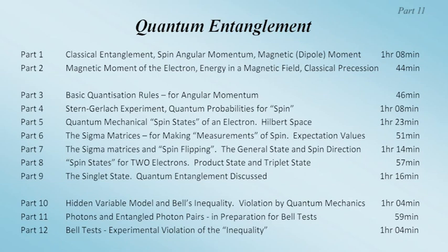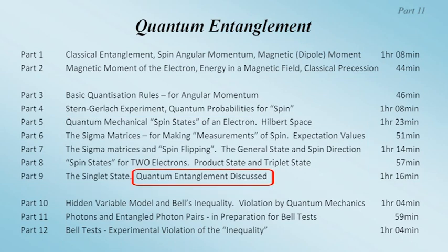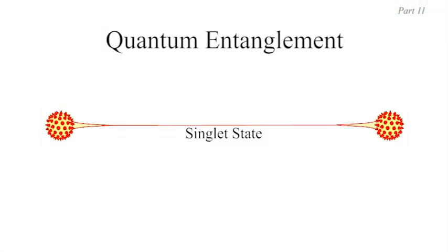In previous videos in this series we've gone through some of the mathematical theory which hopefully persuaded us that quantum entanglement is not just classical entanglement with a twist. The mathematics is clear: the two entangled electrons A and B seem to be connected in some special way. There's no mystery about the total spin of the pair — it is zero and would be measured to be zero in any direction.